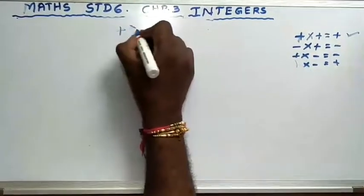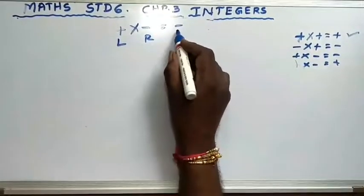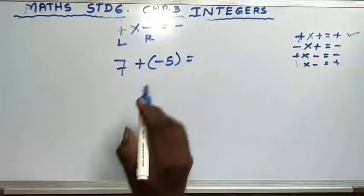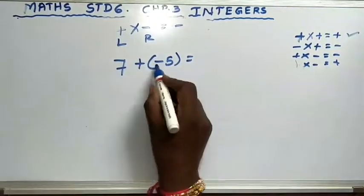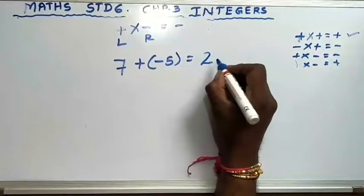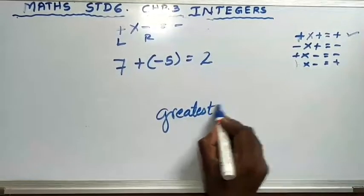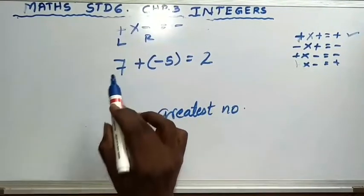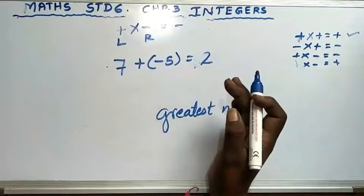Next formula: plus into minus equals minus — left side plus, right side minus. Here also negative. Let's say 7 plus minus 5. Left side positive, right side negative — so plus into minus is minus, meaning you subtract. 7 minus 5 is 2. Which number is greater: 7 or 5? 7 is greater, and 7 has a positive sign. So write positive 2. If you don't write the positive sign it is also okay.